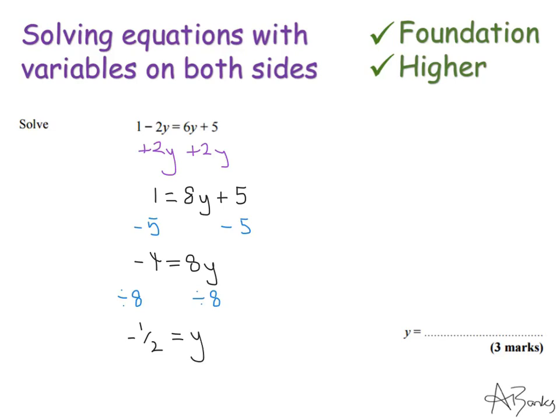Again, I could double-check this like last time. It's going to be slightly harder to double-check. So I'd probably only do this if I'm very confident with my substitution skills or if I had a calculator. But let's do it now. So I've got 1 minus 2 times minus 1 half. And that should be the same as 6 times minus 1 half add 5.